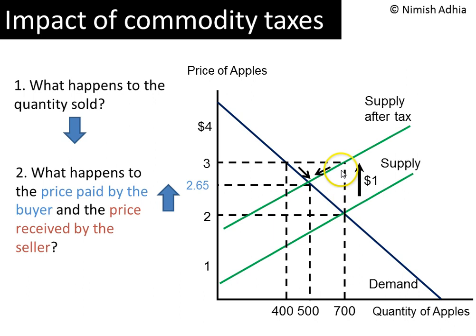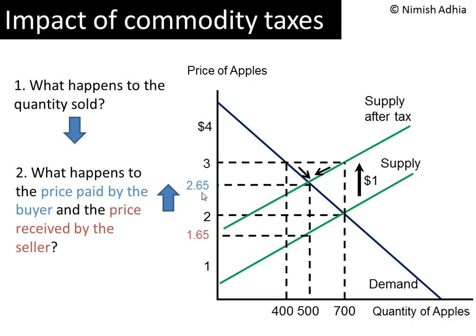Even though suppliers would have liked to raise the price by $1, they were not able to because of how demand and supply works. In general, a tax increases the price paid by the buyers. What about the price received by the seller? Before the tax, suppliers used to get $2. After the tax, the equilibrium price rises to $2.65 — that's what they collect from consumers. But they have to pay $1 tax to the government, so they are left with $2.65 minus $1, which is $1.65. That's the net price they get to take home — lower than the $2 they used to keep. A tax reduces the price received by the sellers.